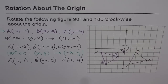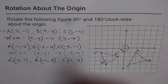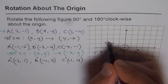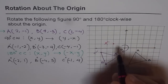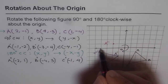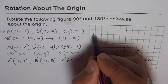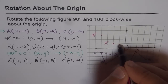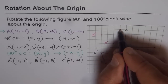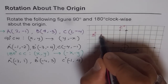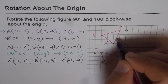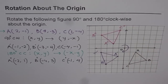Now let us locate them on the coordinate system. A double dash is at (-2, 1): 2 left and 1 up. B double dash is at (-4, 3): 4 left and 3 up. C double dash is at (-1, 4): 1 left and 4 up. Let's join them. That is the triangle after 180 degrees rotation.